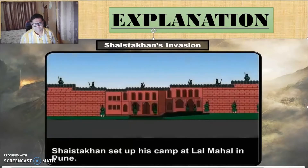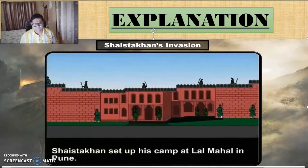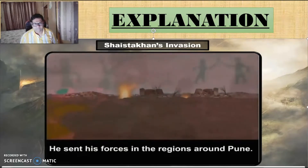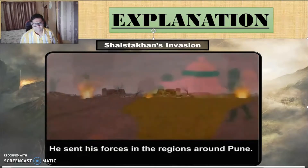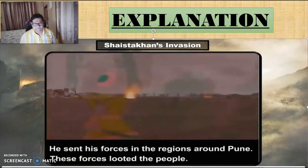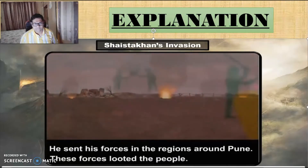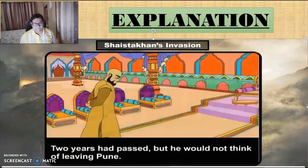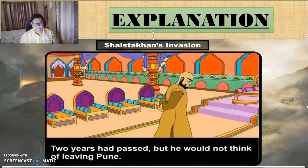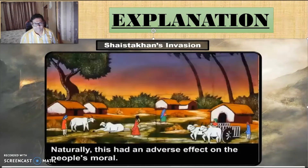Shaishta Khan set up his camp at Lal Mahal in Pune. He sent his forces to the areas around Pune, and these forces looted the people. Two years had passed but he would not think of leaving Pune.